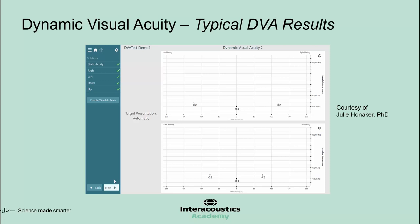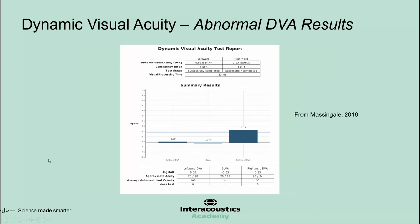A different DVA system displays thresholds for different head velocities in different directions, with baseline visual acuity displayed at zero head velocity. The top figure is for horizontal or yaw head movements, and the bottom is for vertical or pitch head movements. For a patient with a right vestibular lesion, the patient's leftward DVA is considerably better than her rightward DVA. For the rightward DVA, the loss of acuity is approximately three lines.